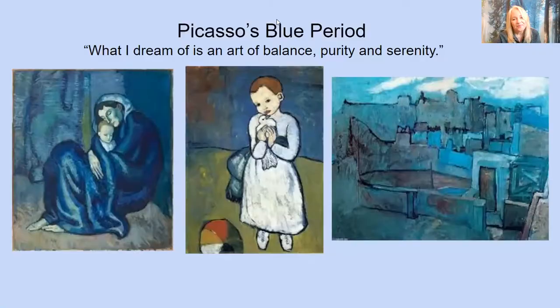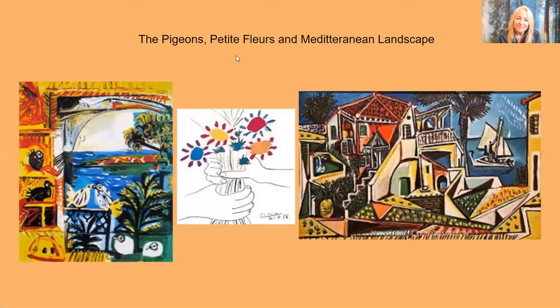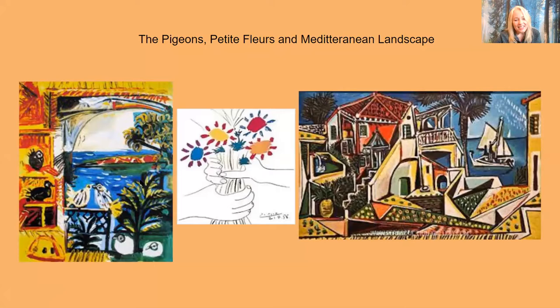That is a very abstract but effective piece by Pablo Picasso. He went through a period in his life where all his paintings were shades of blue — they call it his blue period. And this is a quote by him: 'What I dream of is an art of balance, purity, and serenity.' He was friends with Matisse and he too liked to draw pigeons and doves. This is a famous picture called Petite Fleur, or Little Flowers. He's very famous for his line drawings that, with very simple strokes, make it very clear what it is — and it's very compelling.